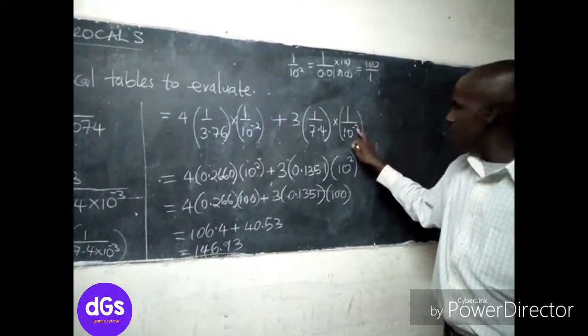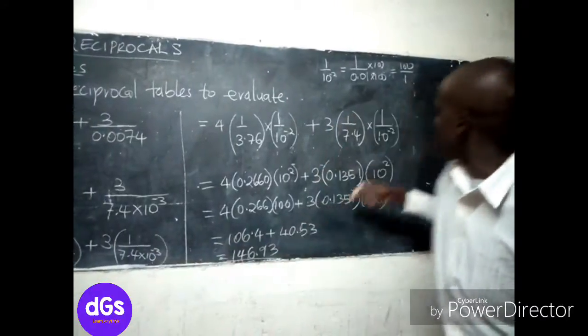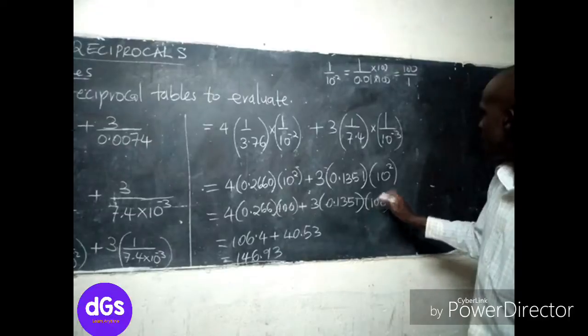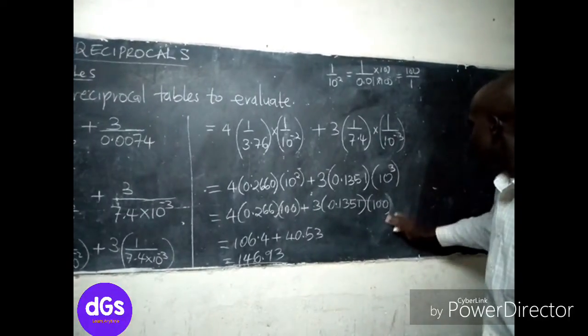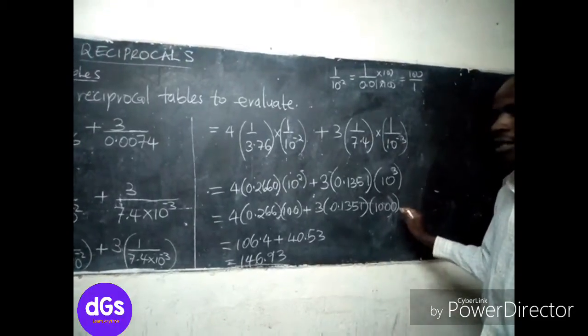I'm noting that there is a problem we have made here. I've seen this was 10 power negative 3, so we put it as 10 power negative 2, but this one should be 10 power negative 3 and this one should be 10 cubed. Sorry for that, a slight mistake.